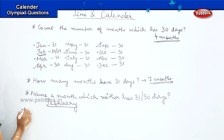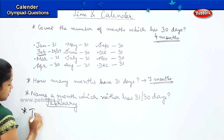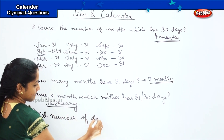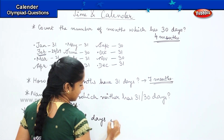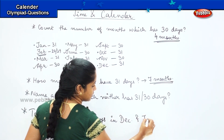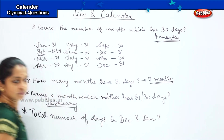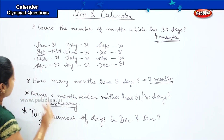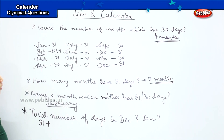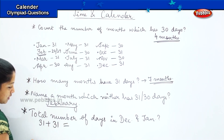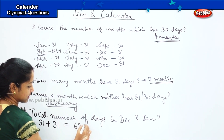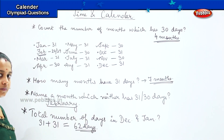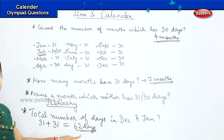Here is one more tricky question: you have to tell me the total number of days in December and January. How many days does December have? It has 31 days. How many days does January have? It also has 31 days. So the total is 62 days.